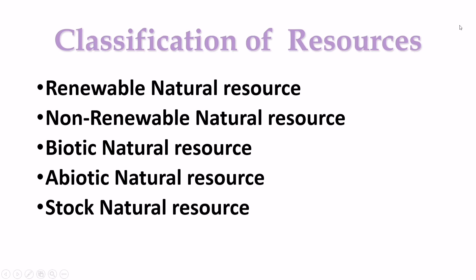Biotic natural resources are living materials — living things like animals, vegetables, and fossil fuels such as petroleum, oil, and coal. Abiotic natural resources are non-living materials, for example water, land, air, and heavy materials like iron, copper, silver, and gold.